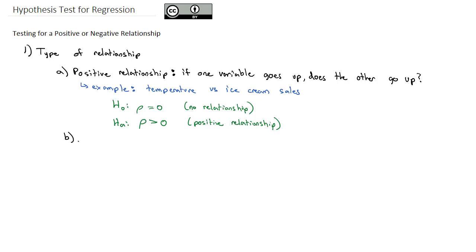And in a very similar way, if we want to test a negative relationship, in other words, we want to test is it true that if one variable goes up, does the other go down? Do they go in opposite directions? And an example of this might be absences in a class versus grade in the class. We might want to know if absences go up, does the grade go down? If absences go down, does the grade go up? They're going opposite directions.